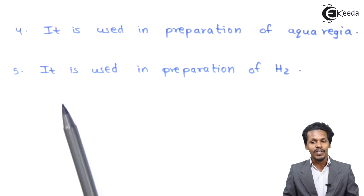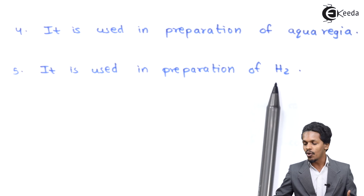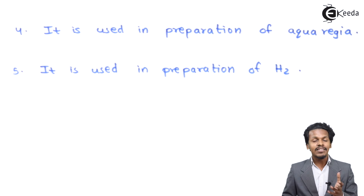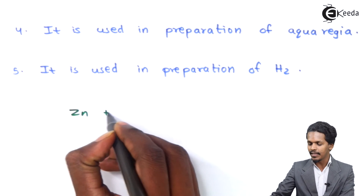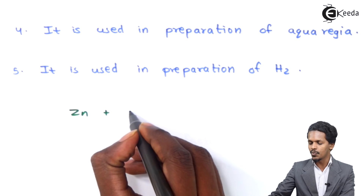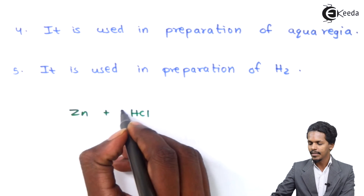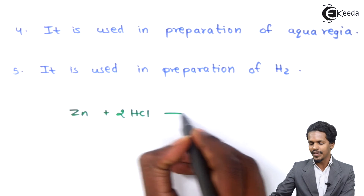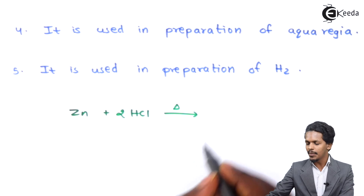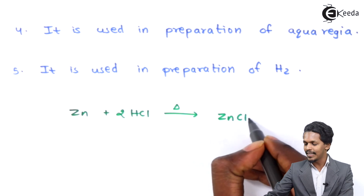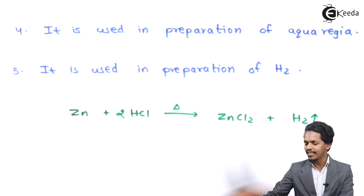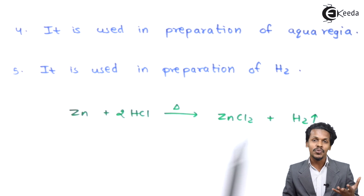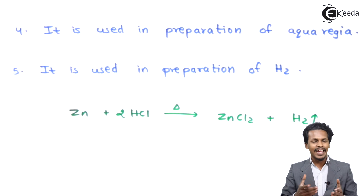The fifth point: HCl is used in the preparation of H₂ gas. For example, if we react zinc with two moles of HCl, the products we obtain are ZnCl₂ along with H₂ as a gas. That's the reason HCl is also used in the preparation of H₂ gas.